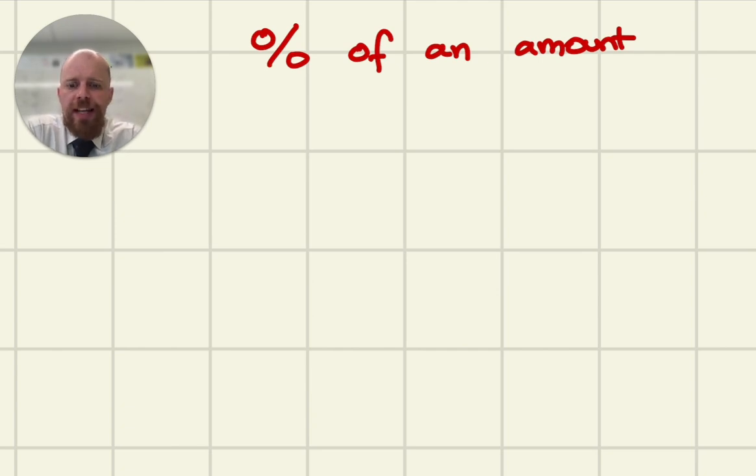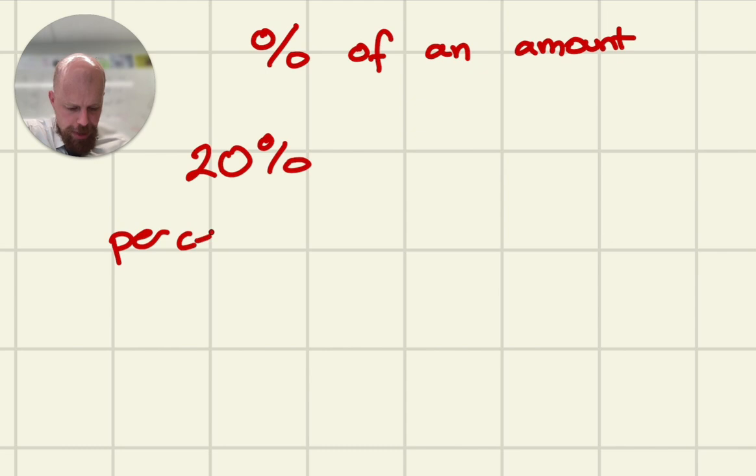First, let's discuss what a percentage is. Let's take, for example, 20%. Well, the word percent quite literally means out of, per cent is 100. So out of 100.